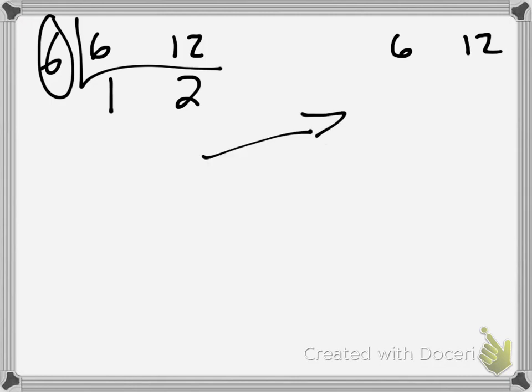Over here, I'm going to say, well, what if I didn't know to start with 6? And I just said to myself, well, they're both even. I could start with 2. So 6 divided by 2 is 3. 12 divided by 2 is 6.